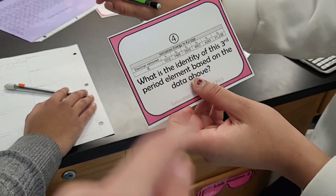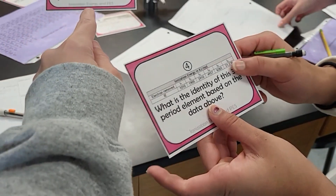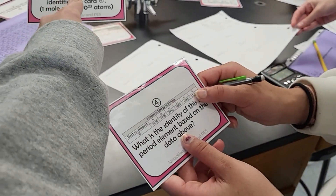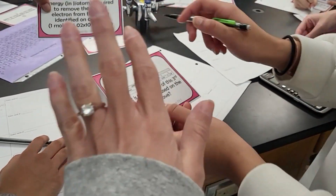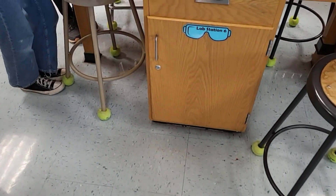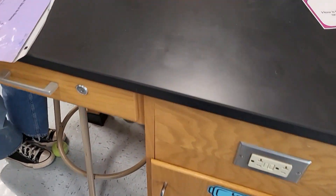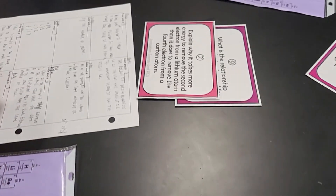What does it tell you to do? It says calculate the amount of energy required to remove the second electron, so you're going to remove the second one. You guys doing okay over here?